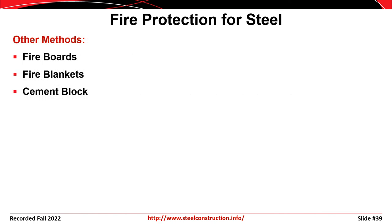Other methods of passive fire protection for steel structures include fire boards that look like drywall but are actually fire retardant, fire blankets, or cement block. Using these methods, the structural elements are wrapped in fire-resistant materials to increase their fire rating.